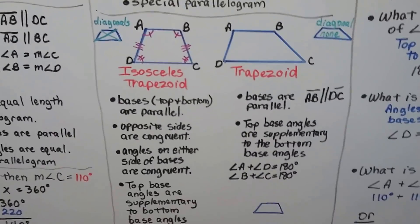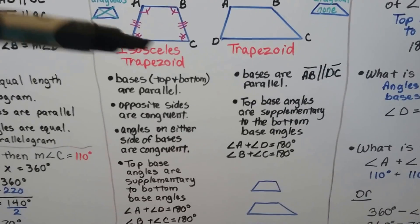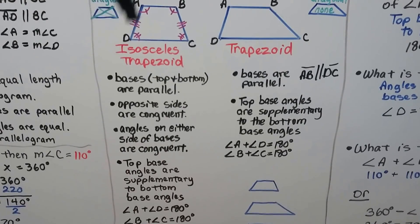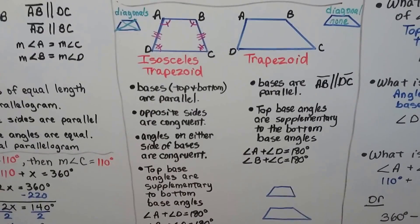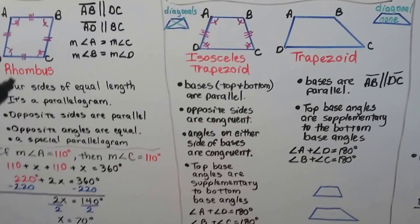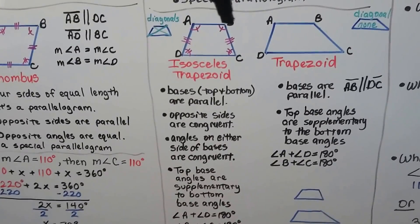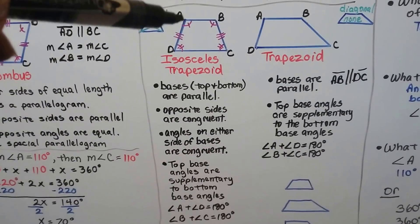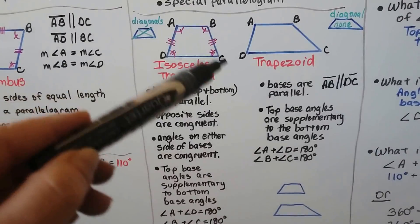Here we have an isosceles trapezoid and a trapezoid. An isosceles trapezoid has the bases as the top and the bottom, and it's got opposite legs that are congruent — this leg is the same length as this leg, like an isosceles triangle. The angles on each side of the bases are congruent: A and B are congruent, and D and C are congruent. Angle A is supplementary with D, totaling 180 degrees, and B and C together are also 180 degrees.